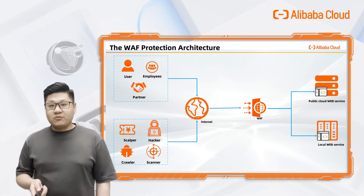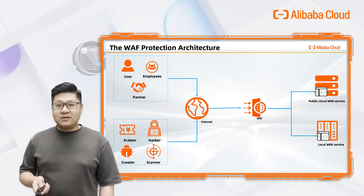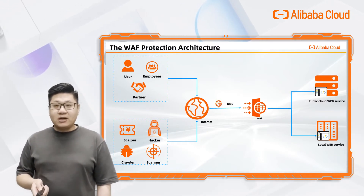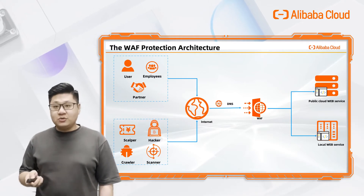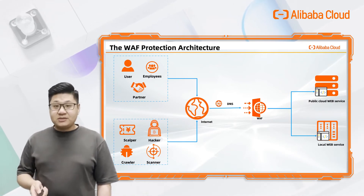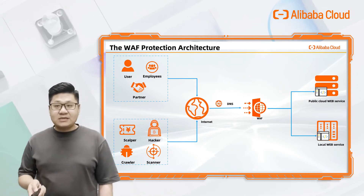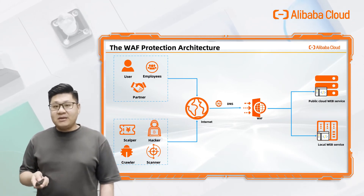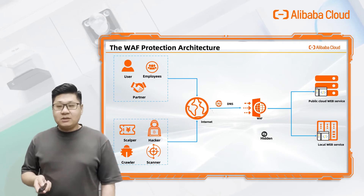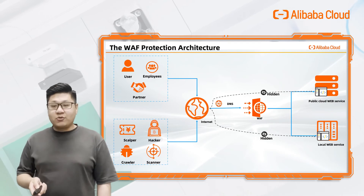WAF uses reverse proxy to do website protection. The first step is to add the domain name to your website in the WAF console, then change the DNS record to redirect the traffic to WAF's CNAME. If the origin server is deployed on an ECS instance, you can configure security group policies in the ECS or SLB to allow only inbound requests from WAF back-to-origin IP pools. This helps prevent attackers from bypassing WAF and directly attacking the origin server.